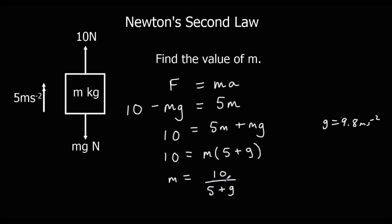And it's mass, so kilograms. If you wanted to substitute in, 10 over (5 plus 9.8) would give you 0.68 kilograms to two significant figures.